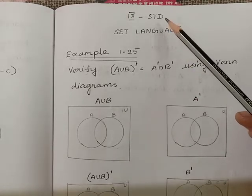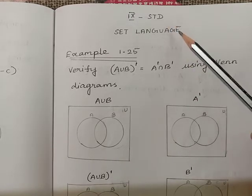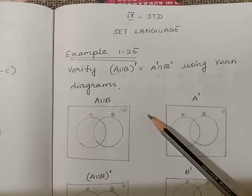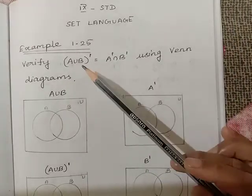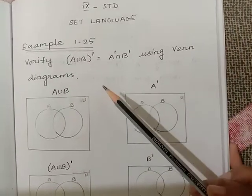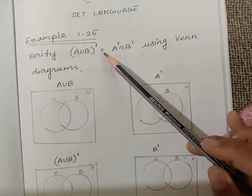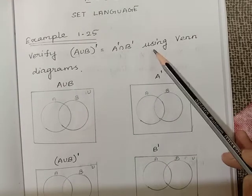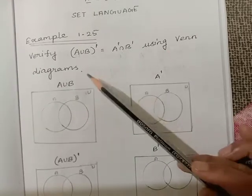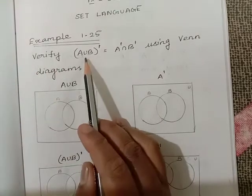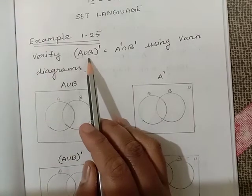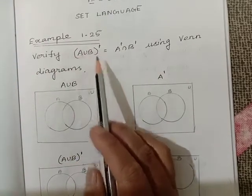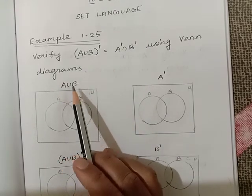Today we are going to learn 9th standard set language, example 1.25: Verify (A∪B)' = A'∩B' using Venn diagrams. First we will come to the left hand side. Inside the brackets, we will first solve A union B.